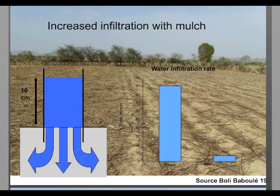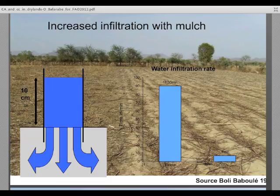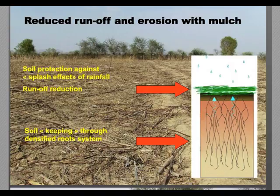A simple trial illustrates how infiltration is influenced by CA. Using a 10 cm high head of water, we measured the time for the water in this pool to completely infiltrate the soil. On conventional tillage plots, it took 1 hour and 30 minutes for the water to fully infiltrate, while it took only 7 minutes on a CA plot.